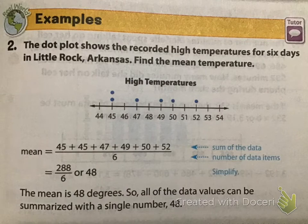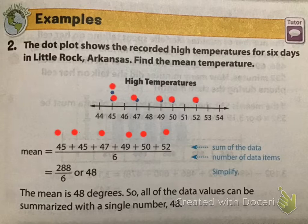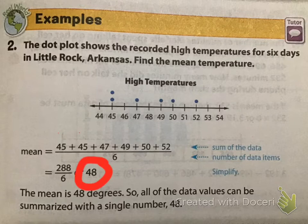Here, the dot plot shows the recorded high temperatures for 6 days in Little Rock, Arkansas. Find the mean temperature. So, it's already showing it for us, but we're going to go over how we do it. Here are the temperatures that we've plotted. We have 45 twice, then we have 47, 49, 50, and 52. And, how many numbers did we have? Six. So, we divide it by 6 at the end. We add them all up and divide and then simplify. So, we find out that the mean temperature, the average temperature, is 48 degrees.